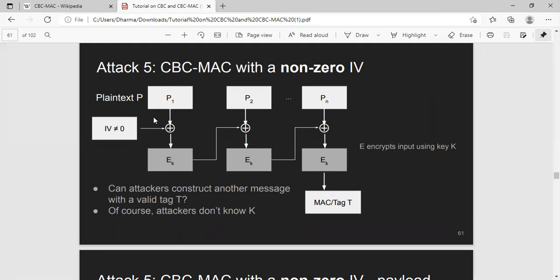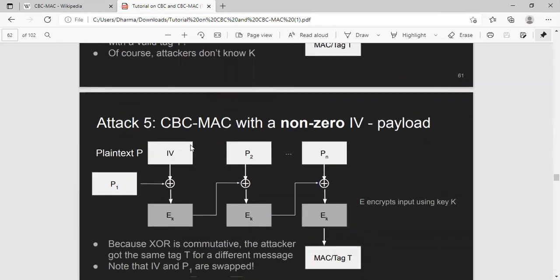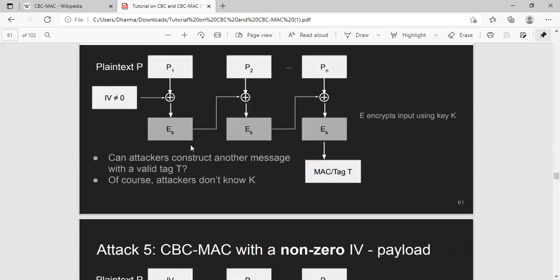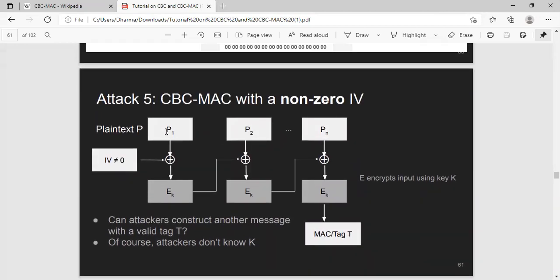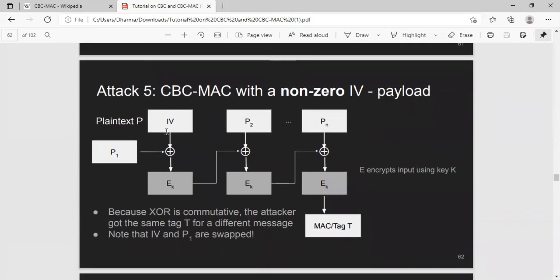Although that message may be a senseless message because IVs are usually random numbers. But if you put in a meaningful value, say in this case, take something that changes the meaning of the text, then Bob will not be able to detect that. If Alice is doing this to Bob or Eve is doing this to Bob, Bob will not be able to detect this. That somebody has modified the text and will pass the MAC verification because there is nothing in the MAC verification that will stop this.